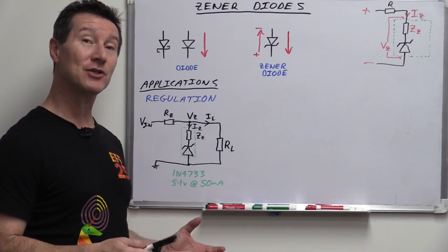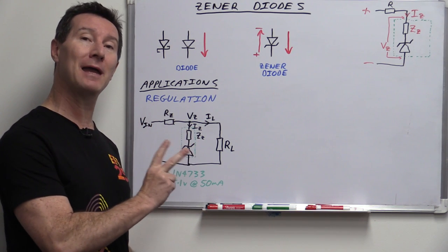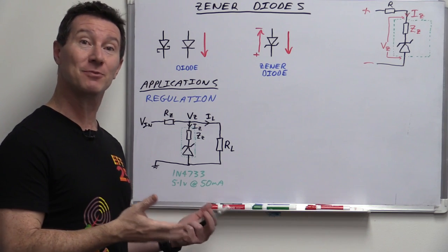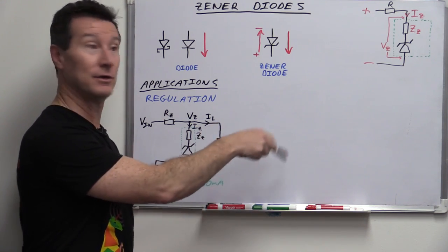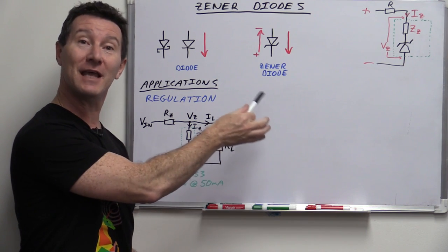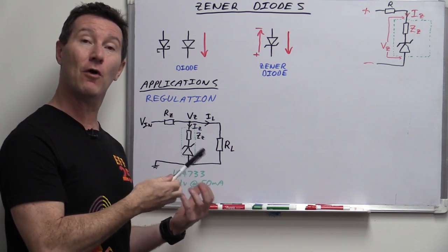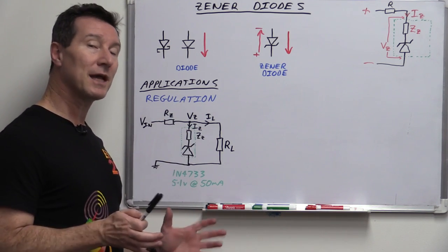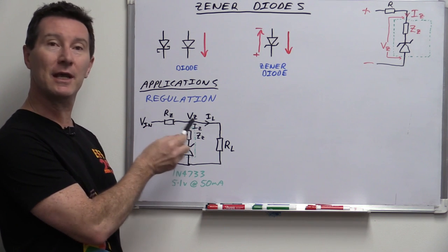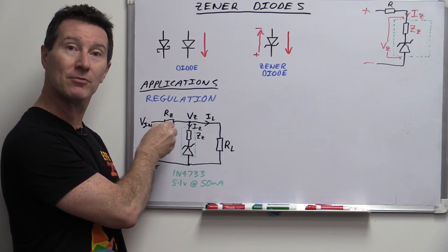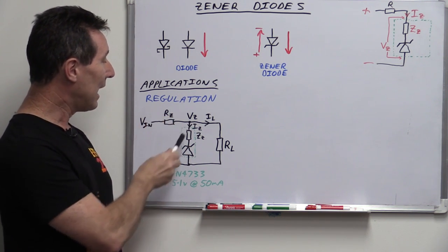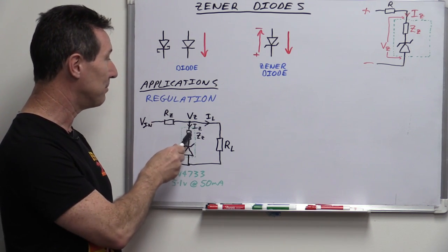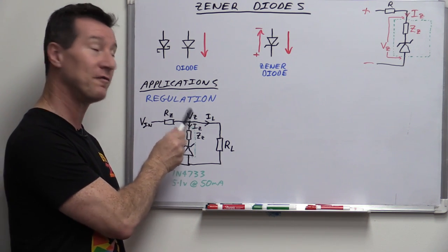Let's take a look at some typical applications for Zener diodes. There are two main applications. The first is voltage regulation — because you can see from the characteristic curve that the Zener produces a stable voltage once it hits that knee, and that can be used for regulation. So here's the classic configuration: we've got an input voltage, a Zener dropper resistor RZ, and the Zener diode itself with its internal dynamic resistance, producing a voltage drop across it called VZ.